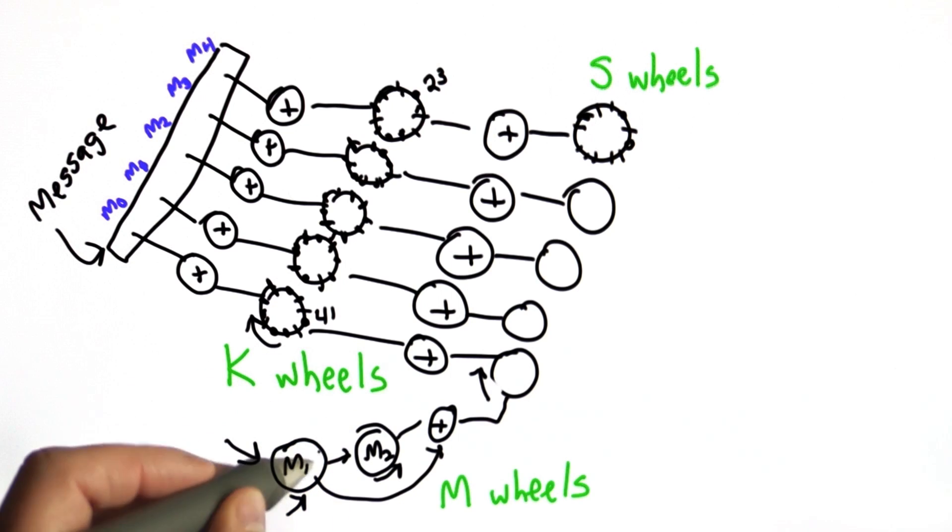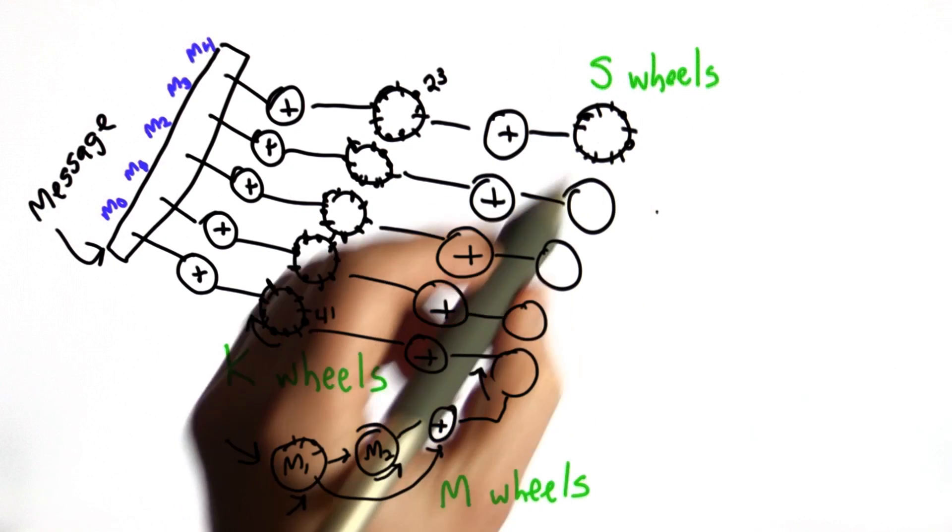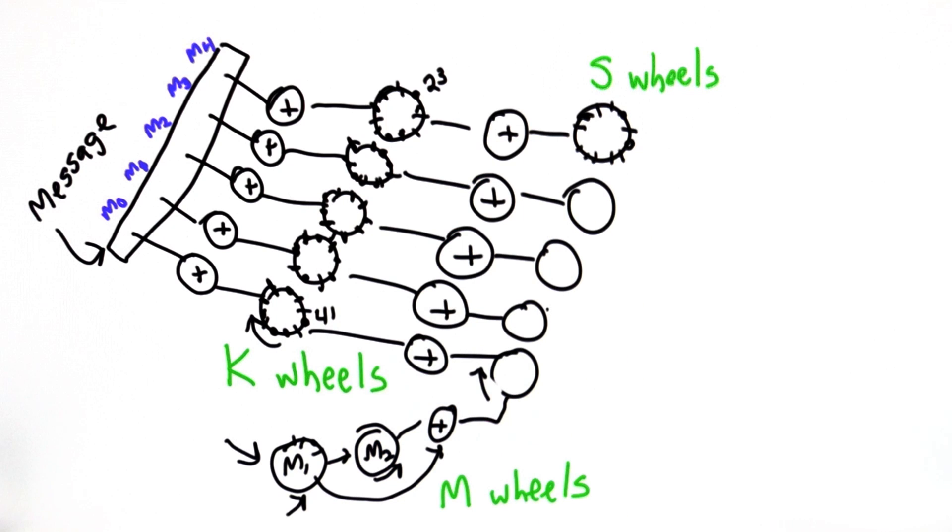The M1 wheel would turn every time. The M2 wheel would rotate depending on the value of the M1 wheel. Depending on the XOR of those, either all the S wheels would rotate by 1 or none of them would.